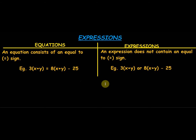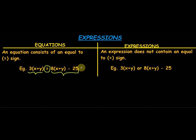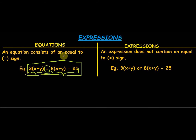Now let's see the difference between an equation and an expression. The major difference is that an equation contains an equal-to sign but an expression does not. For example, this contains an equal-to sign which means this entire thing is an equation. Individually, each part is an expression, but when they are put together with an equal-to sign in the middle, the entire thing becomes an equation.